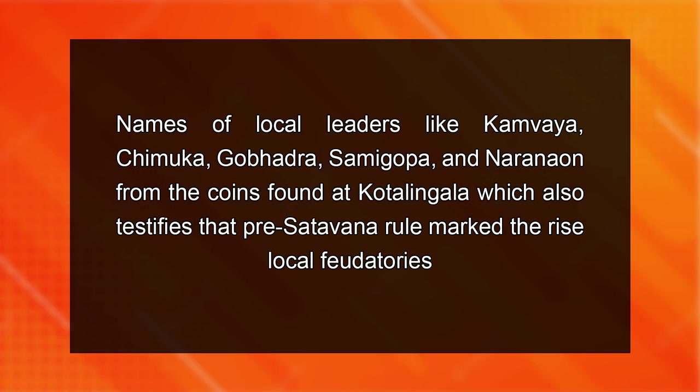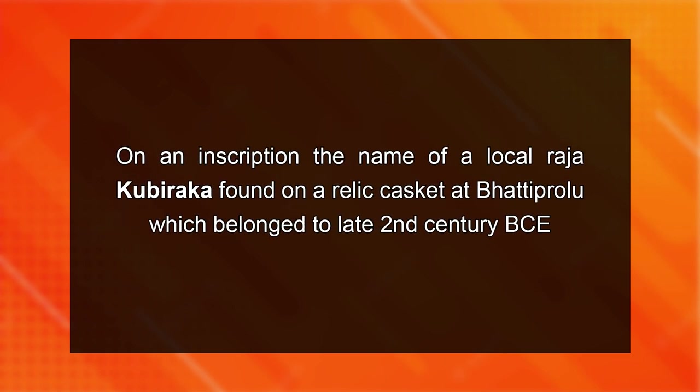Similarly, coins of Kura rulers have been discovered at Brahmapuri, and both of these coins belong to the pre-Satavahana period. We also find the names of local leaders like Kambaya, Chimuka, Gobhadra, Samigopa and Naron from coins found at Kota Lingala, which also testifies to pre-Satavahana rule marking the rise of local feudatories. Similarly, we find the name of a local Raja, Kubiraka, on an inscription found on a relic casket at Bhatti Prolu, which belonged to the late 2nd century BCE. All these sources indicate the rise of local powers between the fall of Mauryas and the emergence of the Satavahanas.